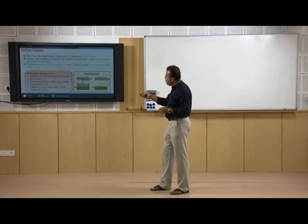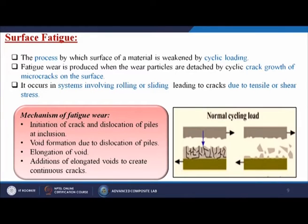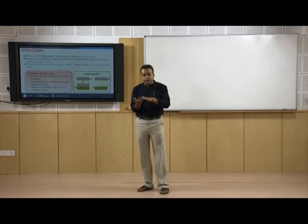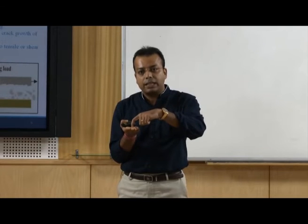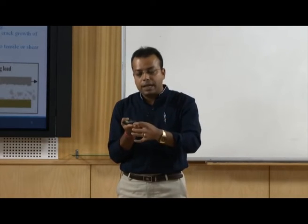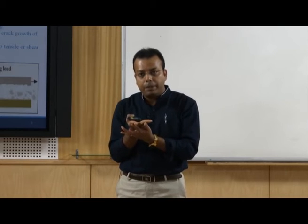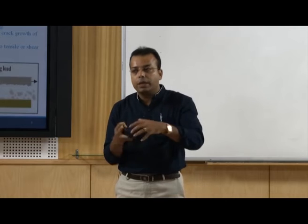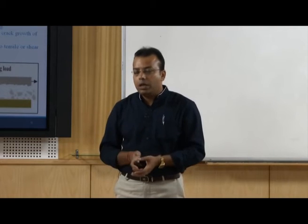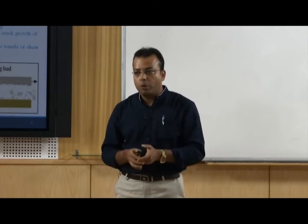The mechanism of fatigue wear involves: initiation of cracks and dislocation piles at inclusions, void formation due to dislocation piles, elongation of voids, and further elongation of voids to create continuous cracks. With two materials under continuous load, first crack generation takes place, then the crack becomes bigger, and through that crack it goes deeper until the material breaks into smaller pieces.